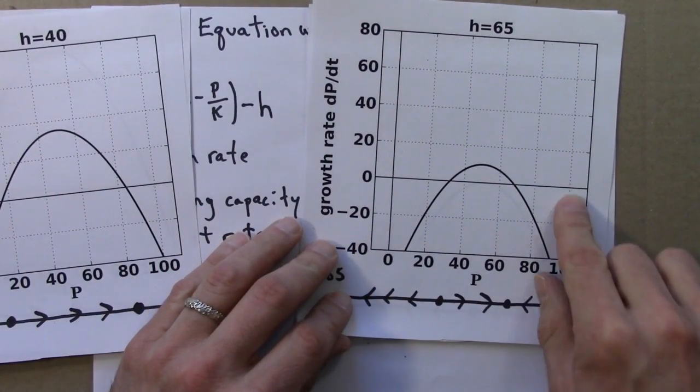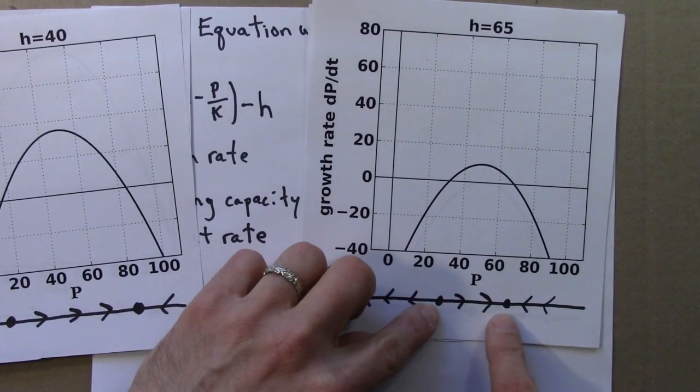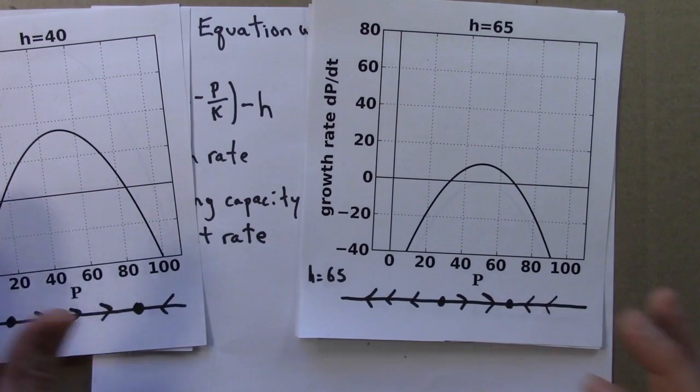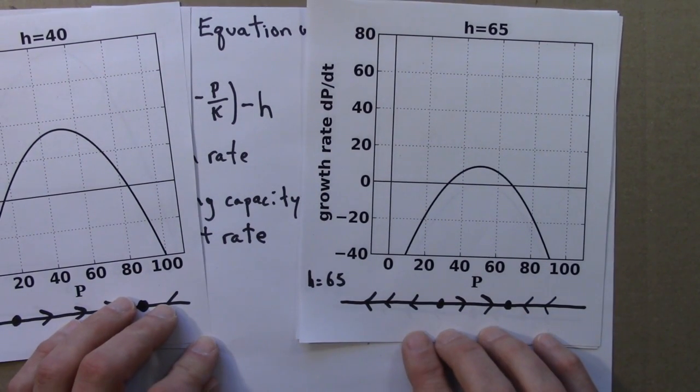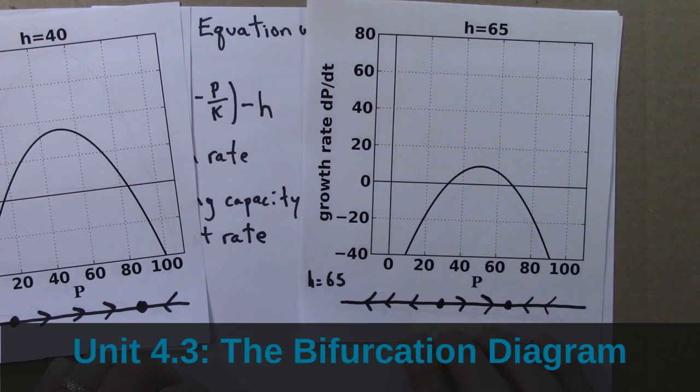In this video, I'll show how we can combine all this information to produce something called a bifurcation diagram that's a really important quantity in the study of dynamical systems and lets us see how a system's behavior changes as a parameter is varied.